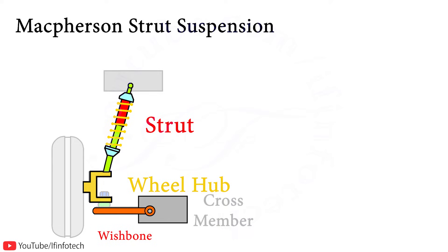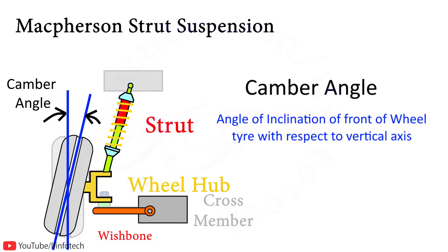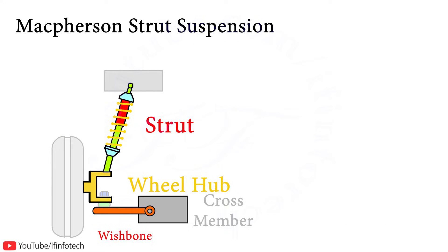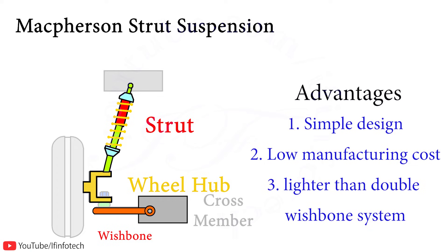During working, the system cannot allow vertical movement of the wheel without a change in camber angle and sideways movement, therefore it allows less freedom to choose camber angle. The MacPherson strut system has a simple design, low manufacturing cost, and is lighter than the double wishbone system. It gives maximum space in the engine compartment and hence is used in front-wheel drive vehicles.